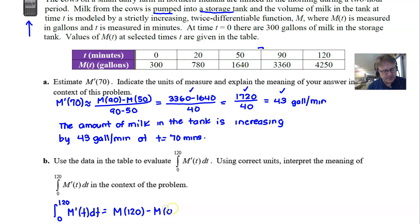Use the fundamental theorem of calculus to evaluate at your upper boundary, subtract evaluation at your lower boundary, and you essentially read these right from the table: 4250 minus 300. This turns out to be 3950.